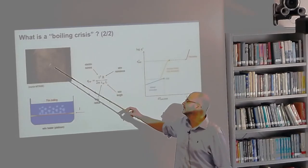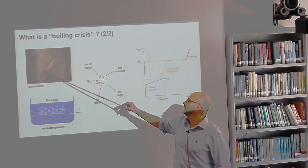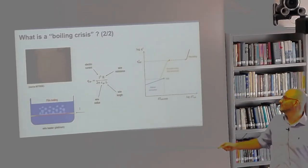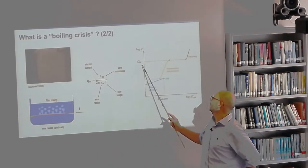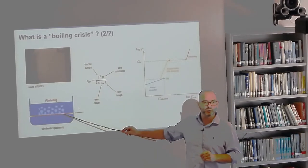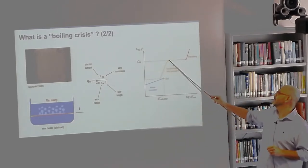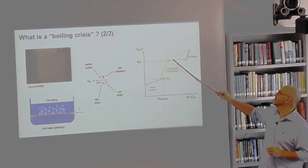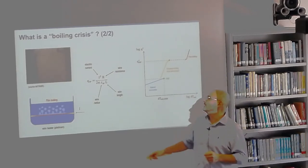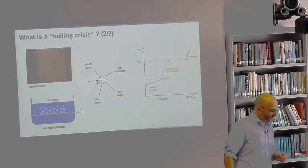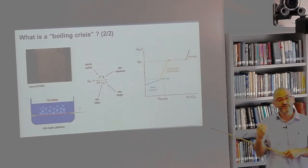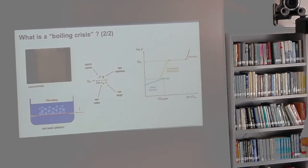If you keep increasing the heat flux, at some point bubbles on the surface will merge to form a continuous vapor layer with poor heat transfer properties. From a fairly stable equilibrium with high heat transfer coefficient, you jump immediately to a situation of so-called film boiling — where 'film' stands for vapor film. If the temperature is too high, the wire may actually melt and break. Those yellow flames you see are not fire — it's simply radiation emitted by the warming wire, eventually reaching the visible range.